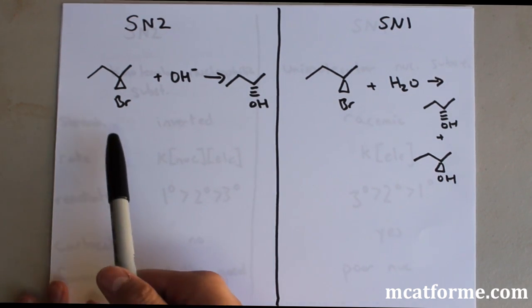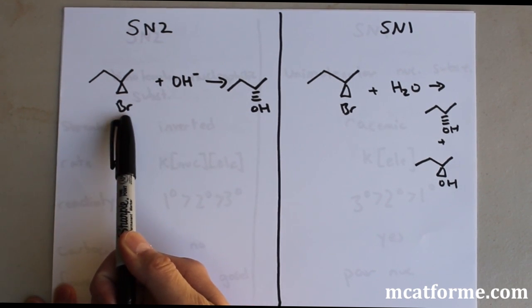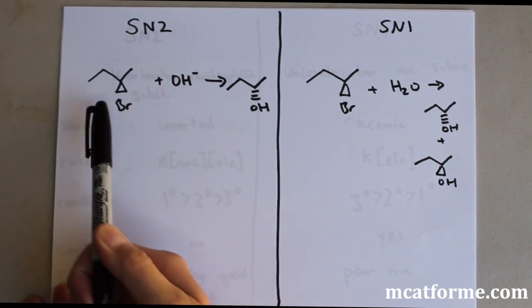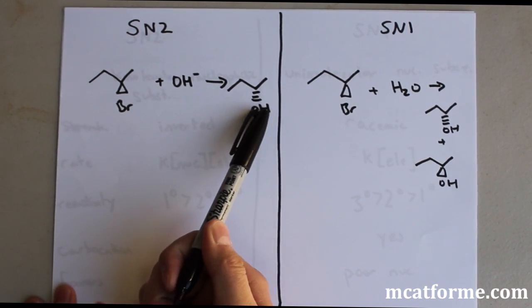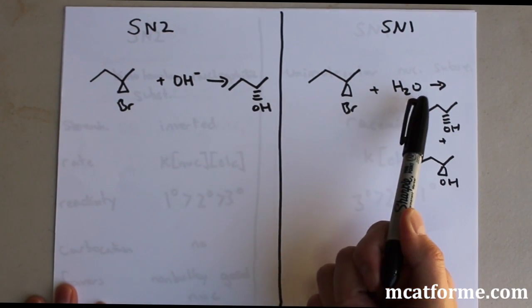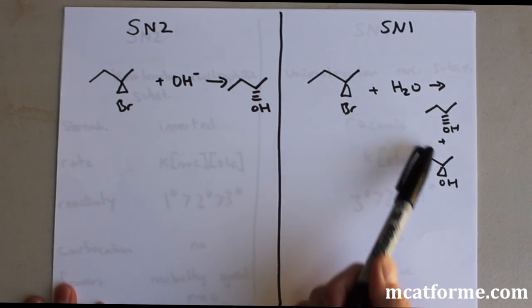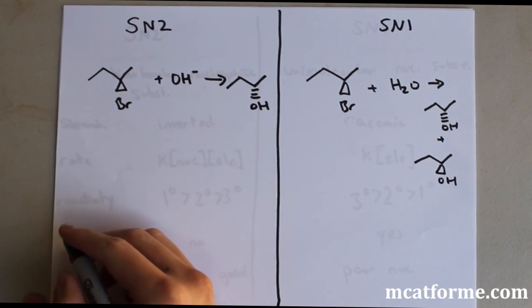In SN2, this nucleophile is going to replace this halogen, and we see that it's an inversion of stereochemistry. In SN1, we see that this OH is going to replace the halogen, but it's going to be a racemic mixture. So, let's see how that happens.